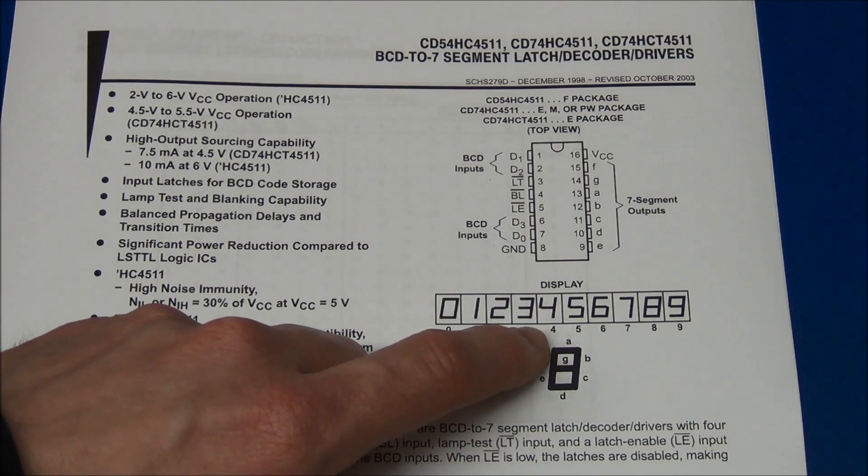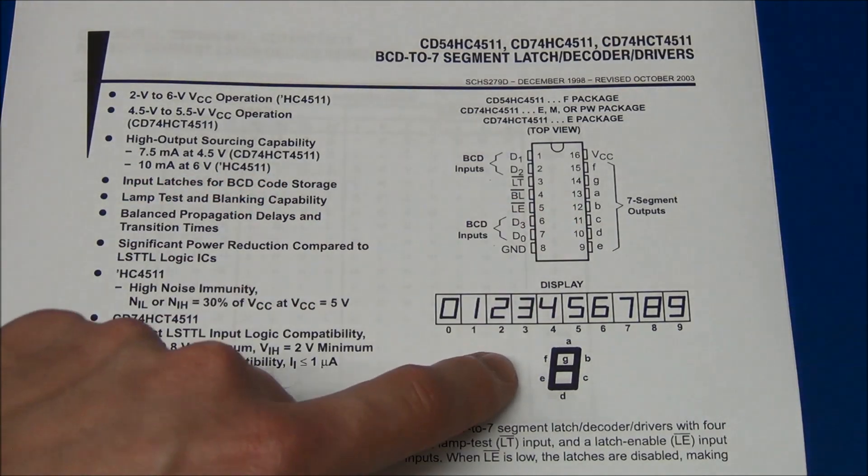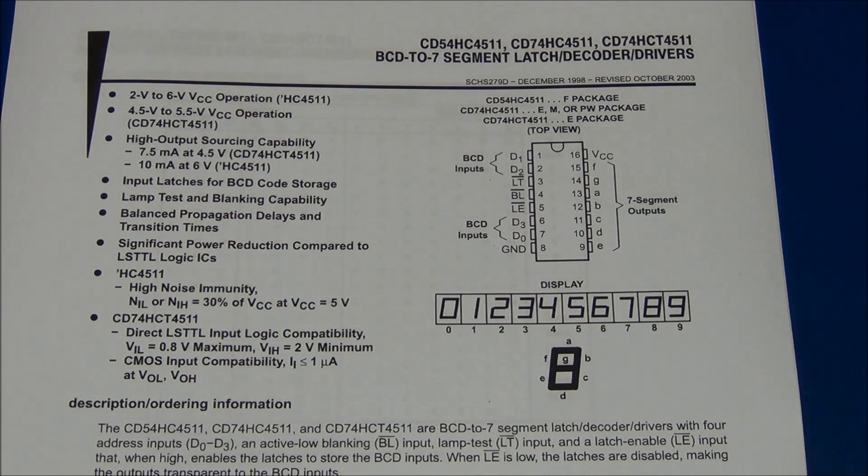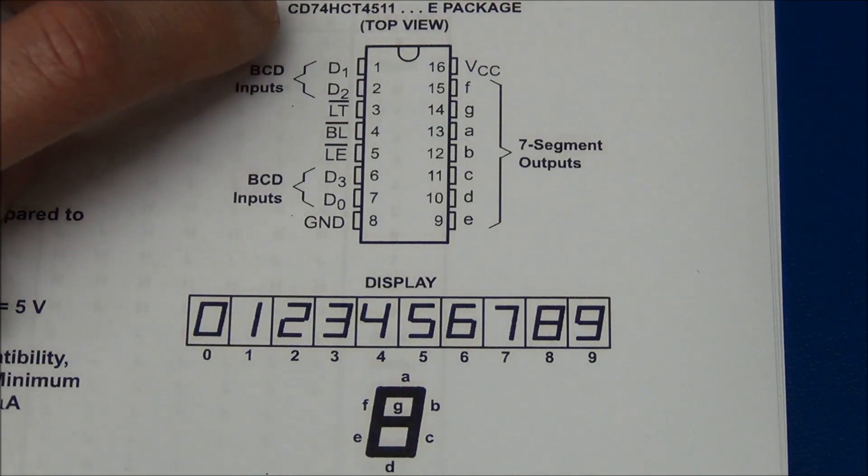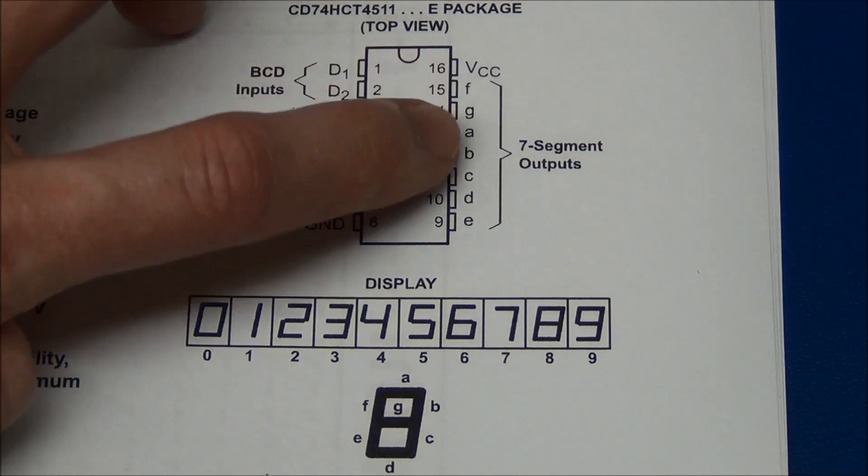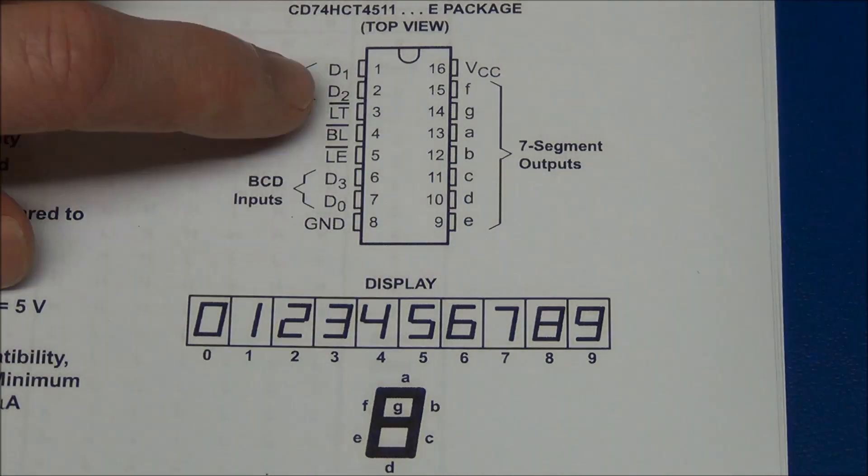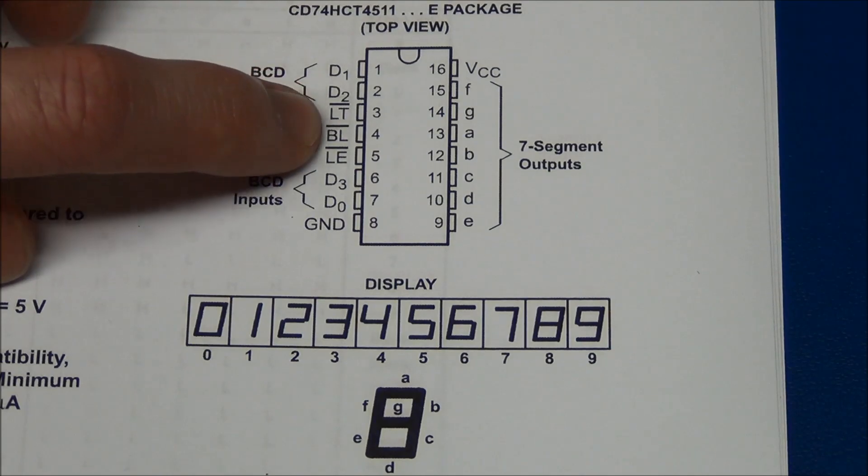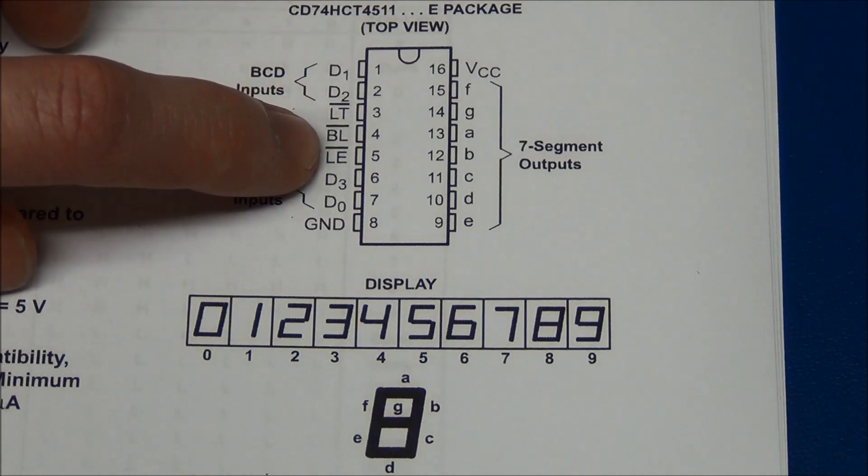So we connect the correct pin from the chip to the correct pin of the display. And we can see we have 4 digital inputs and 7 outputs. The chip has got the capability to light up all the pins, blank all the pins, or it can latch the output.